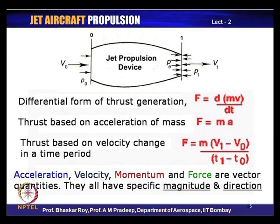These are the fundamental requirements of the propulsive system, without which you cannot have sustained, controlled aircraft flight. There are two or three fundamental ways of looking at thrust generation. One is a differential form of the thrust equation, written in terms of momentum change in a certain time. This momentum change across the propulsive system can be written as d(mv)/dt, where mv is momentum and d(mv)/dt is the rate of change of momentum which creates thrust.